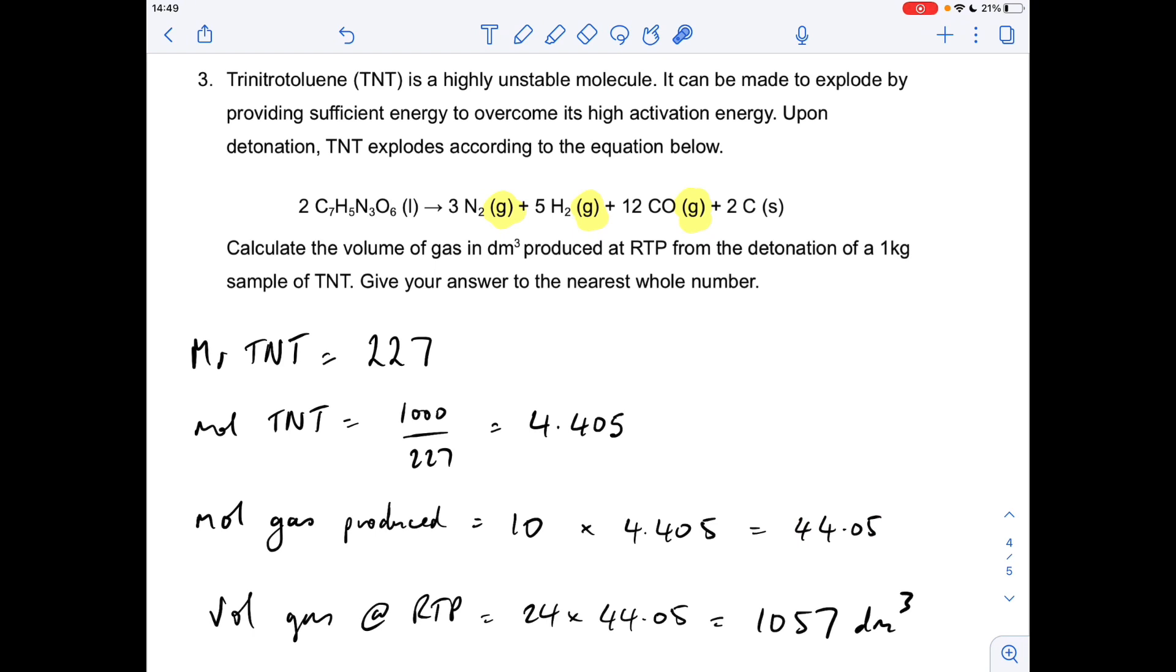So the volume of gas, we're at RTP, which is a bit artificial really, because if you detonate TNT, it's going to be a bit hotter than 25 degrees C, but we'll just go with this. So the volume of gas at RTP, 24 times the moles, 1057 dm cubed.